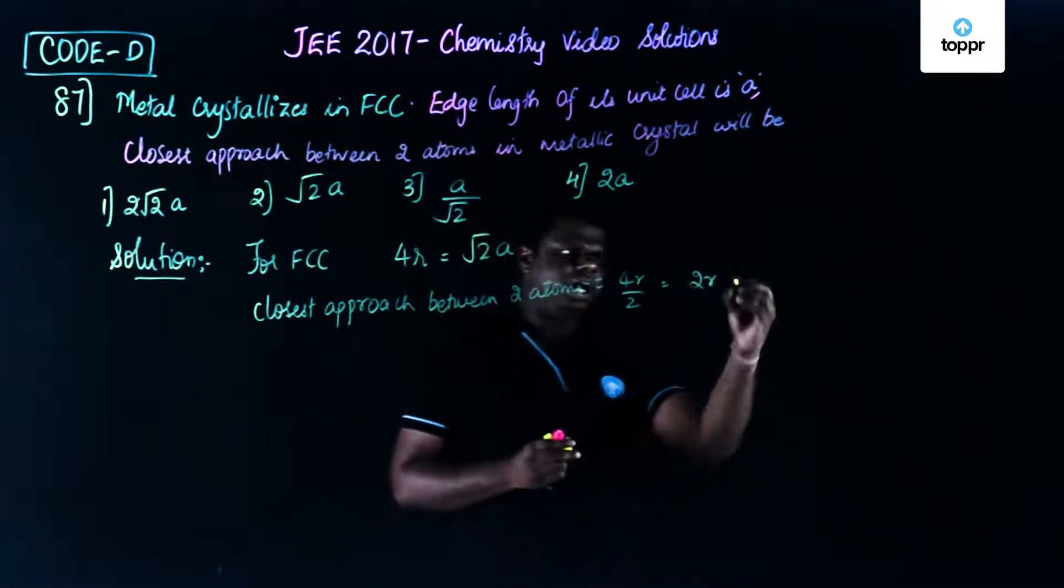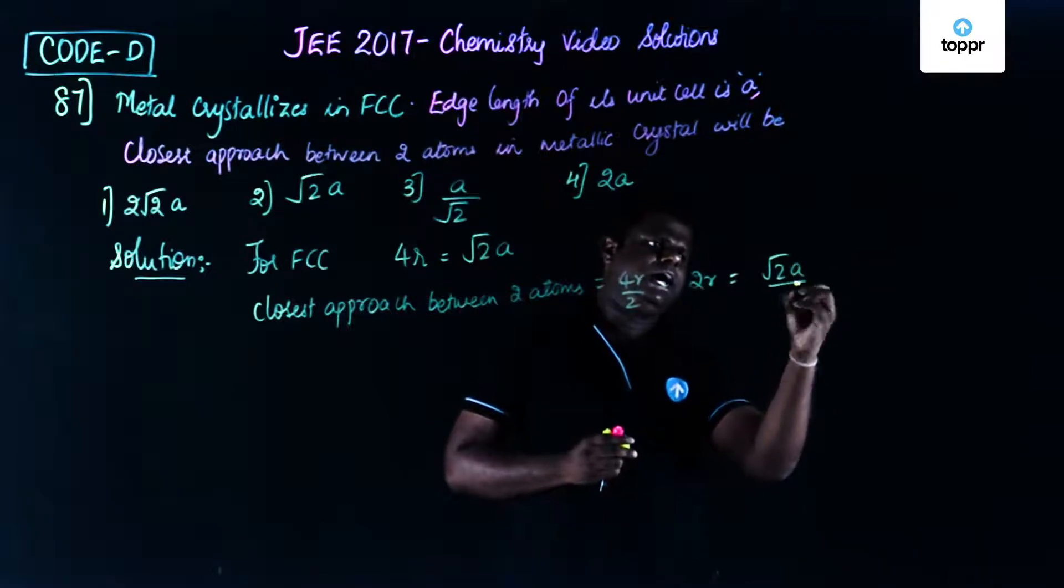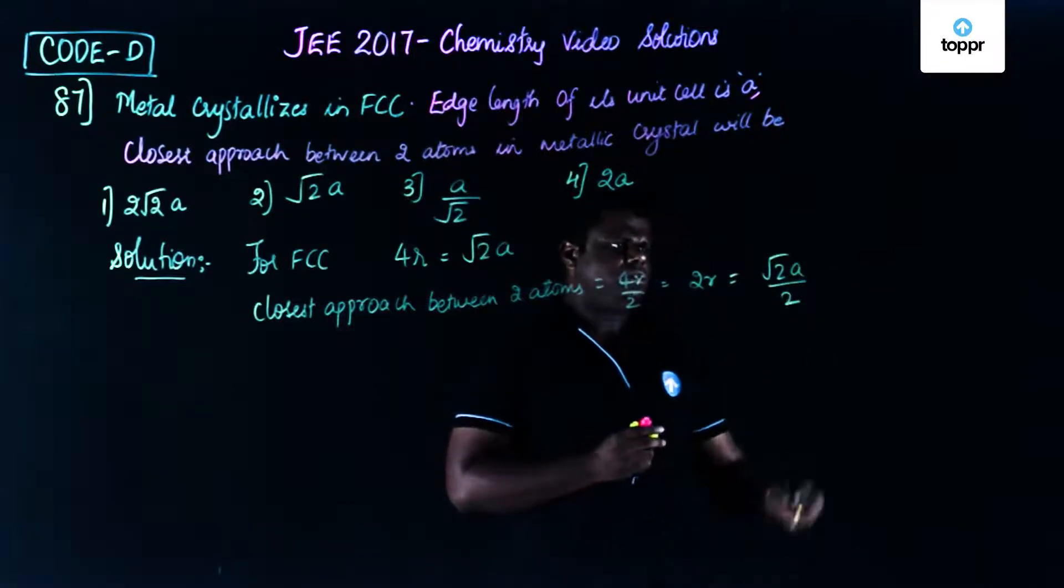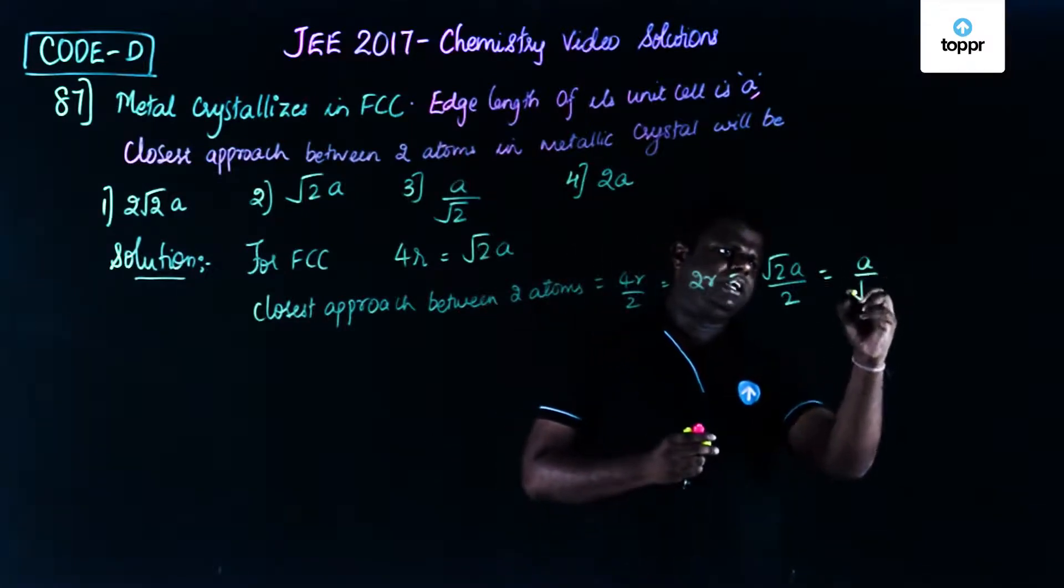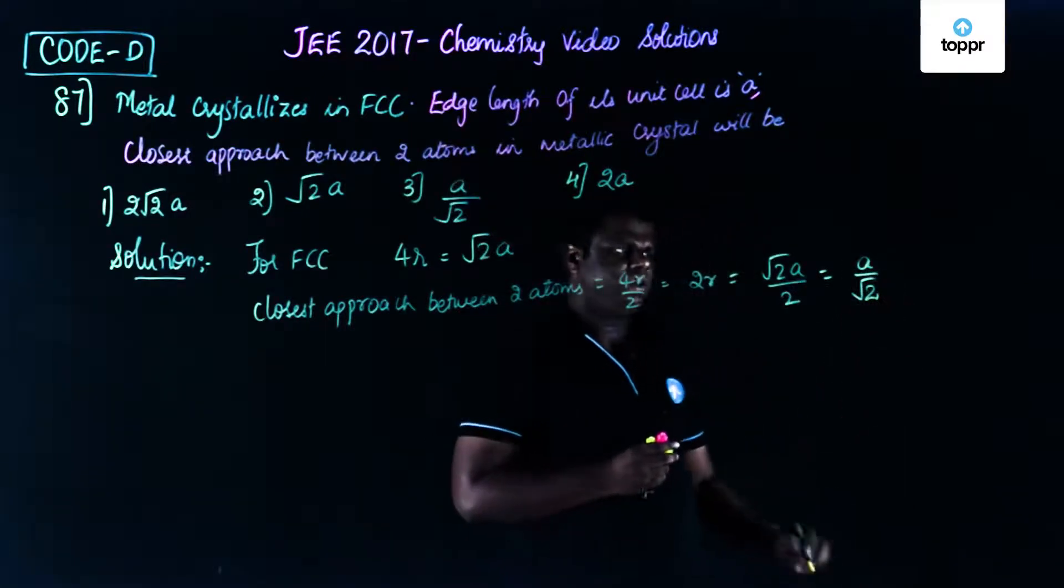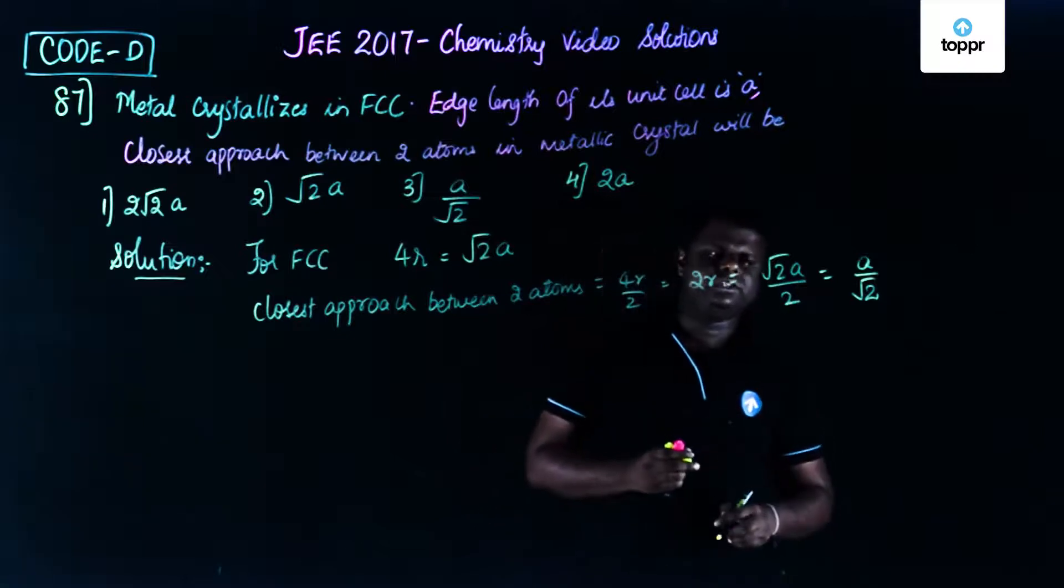So you know 2r is equal to root 2a by 2, correct? So if you solve this, it becomes equal to a by root 2.